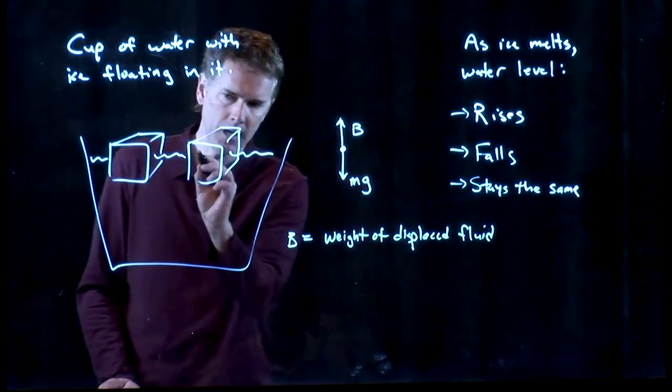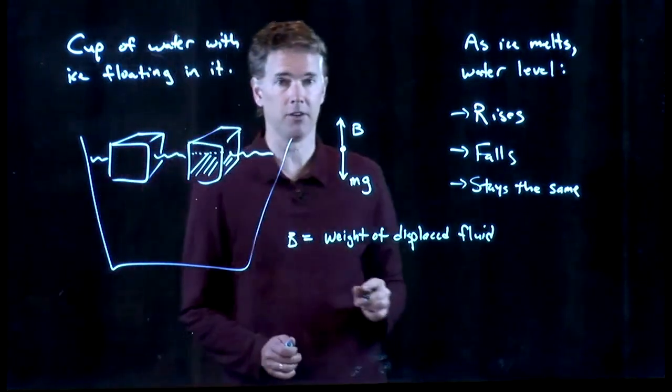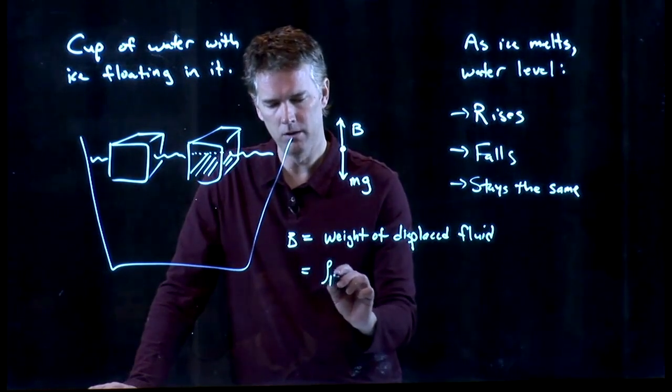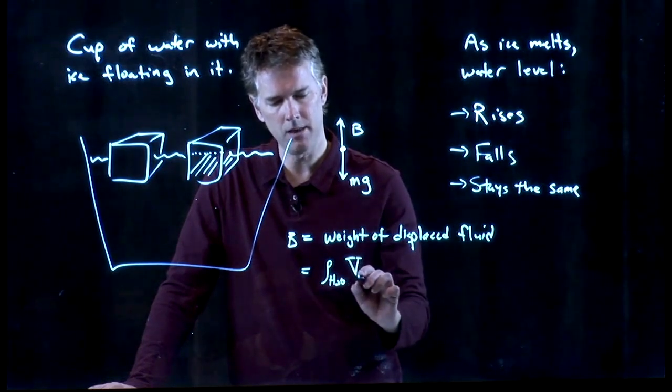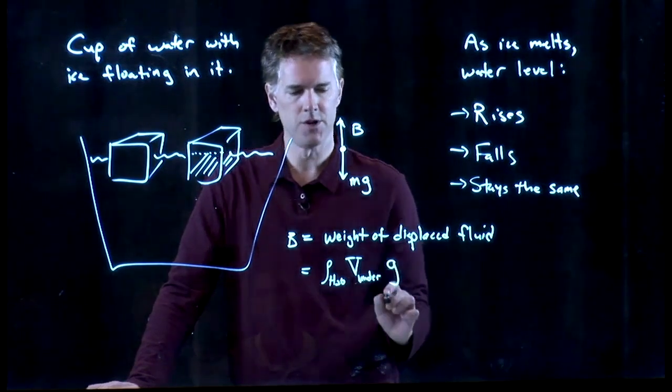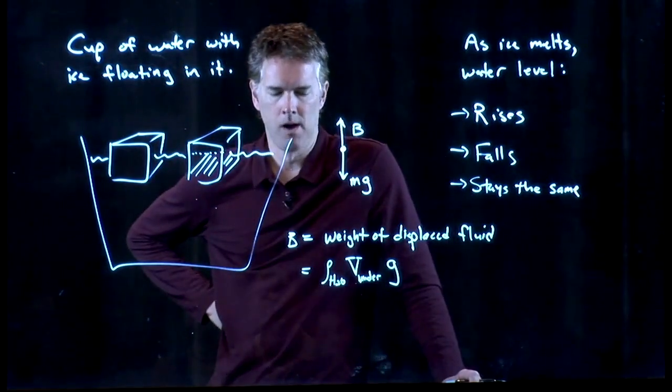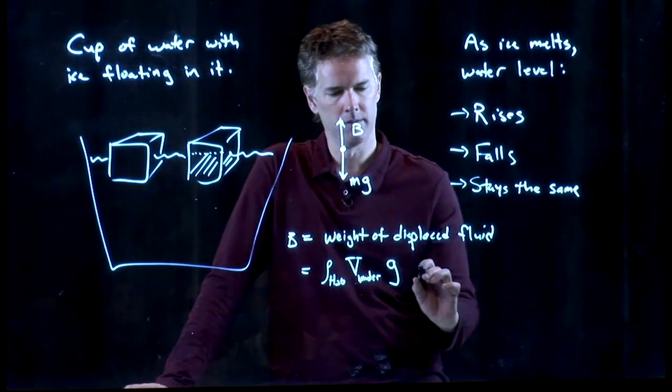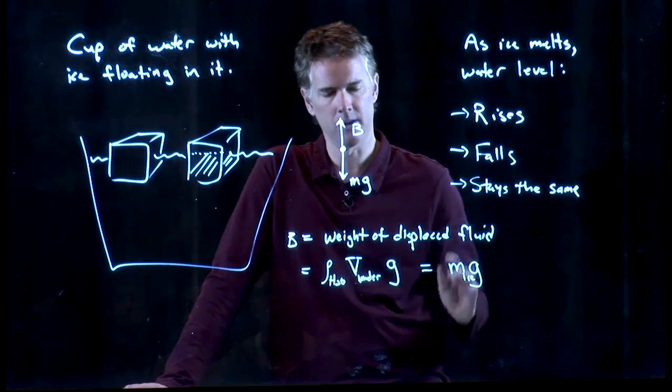So for one ice cube, we're talking about that amount that's under the water. That's the displaced fluid. And so we know what that is: rho of water times the volume underneath times g. But that has to be equal to mg if it's floating, where this m is the mass of the ice.